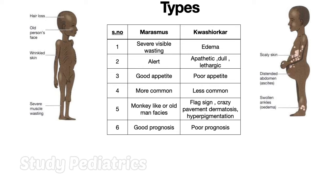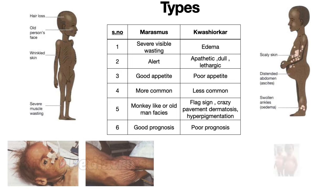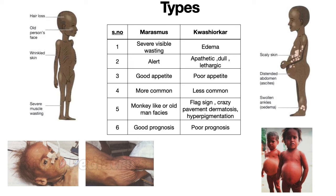A marasmic child is basically a baby with severe visible wasting, whereas in kwashiorkor the child mainly has edema, which may give false satisfaction to parents as being healthy. A marasmic child is usually alert with good appetite, whereas in kwashiorkor the child is dull, lethargic, and has poor appetite. Marasmus patients have a monkey or old man face, whereas kwashiorkor is less common and, due to edema, they lack such coarse facial features. In kwashiorkor we can see the flag sign, crazy pavement skin lesions, or hyperpigmentation. The marasmic baby has better prognosis compared to kwashiorkor.